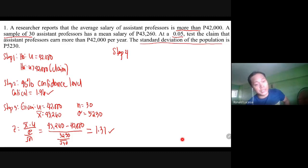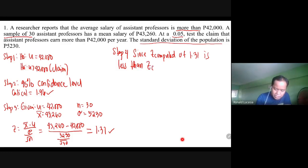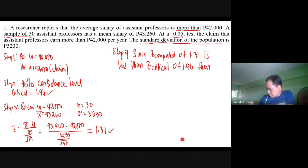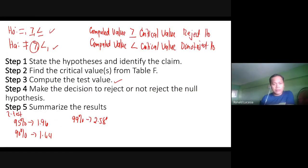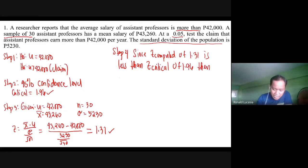Step four: decide whether to reject H₀ or do not reject H₀. Since the Z-computed value of 1.31 is less than the Z-critical value of 1.96, the decision is: do not reject H₀.